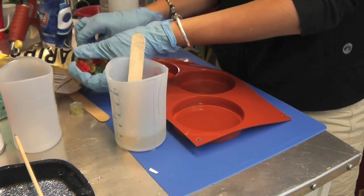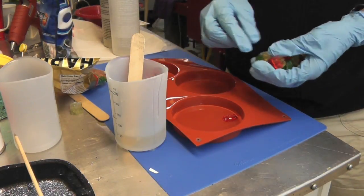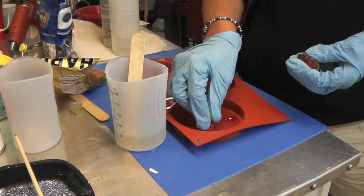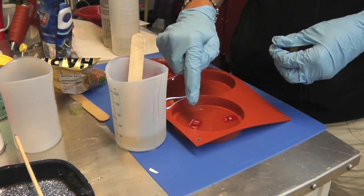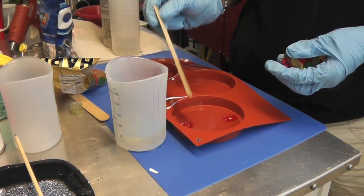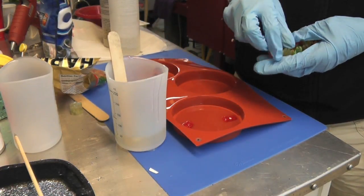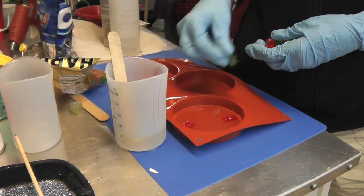Now that I have the resin in there I can put the gummy bears in. And they should sink to the bottom and I'm going to try to kind of place them around so that their same colors aren't right one on top of the other. Make it look random even though it isn't exactly random.